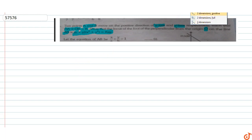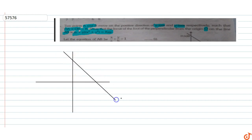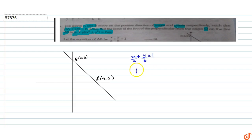Looking at the coordinate system, we have a line AB. Point A is at (a, 0) and point B is at (0, b). The intercept form of the line AB is x/a plus y/b equals to 1, that means bx plus ay equals to ab.